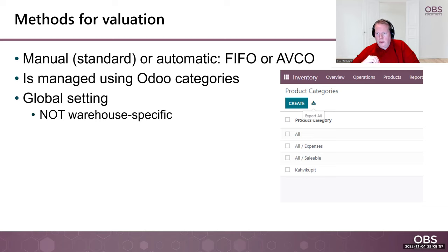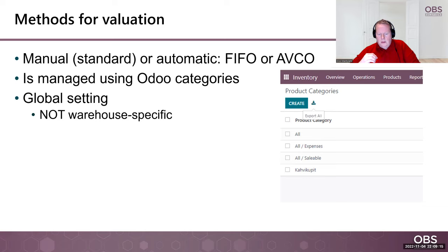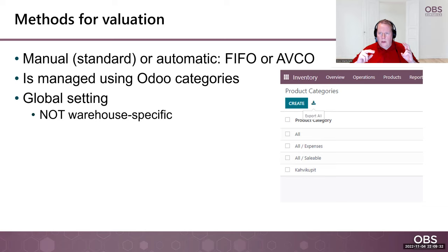We will get back to those in a bit later. What you should know is that inventory valuation is managed in Odoo in product categories, and it is a global setting. If you have multiple companies, those can have different valuation methods. But the categories are global for one Odoo company, and they are not warehouse specific — so it is not possible to do valuation in one warehouse using manual and another warehouse using automatic.